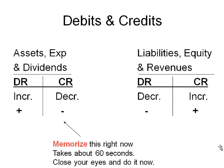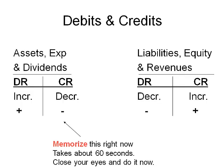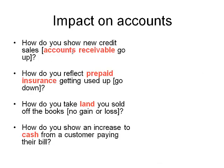Let's do a few together — remember to memorize the left side and know the other things are opposite. First: how do you show new credit sales? You sold something to a customer but they didn't pay you. Accounts receivable is going to go up and revenues are going to go up. Accounts receivable is an asset — to make an asset go up you debit it. To make revenue go up you credit it. So the journal entry is a debit to accounts receivable and a credit to revenue.